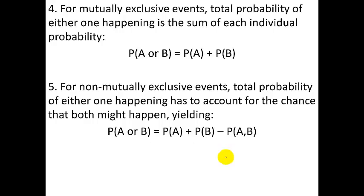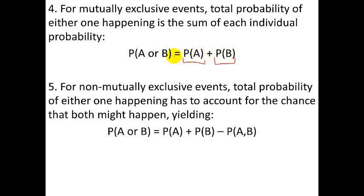For mutually exclusive events, which means they cannot both happen, the total probability of either one happening is the sum of their individual probabilities. Since they can't both happen, you add the chance of the first to the chance of the second. For example, the probability of rolling a one or a two on a dice is just the combined probability of those two, because they don't overlap.